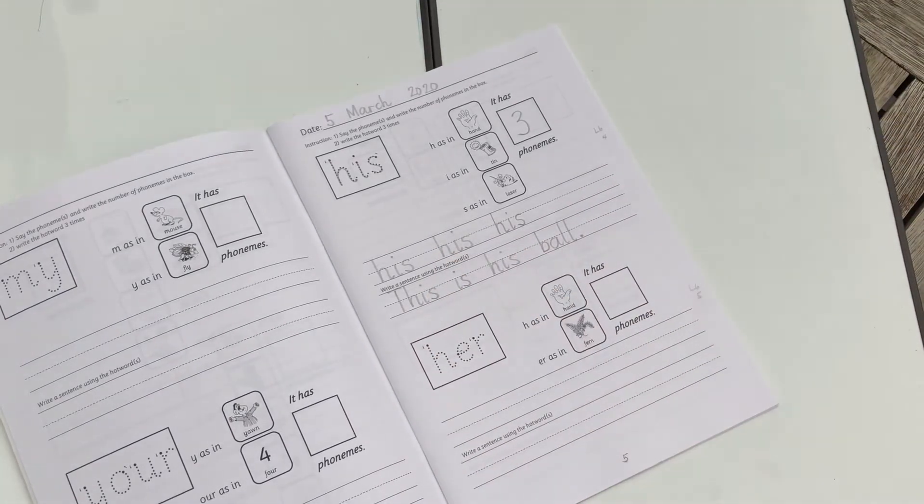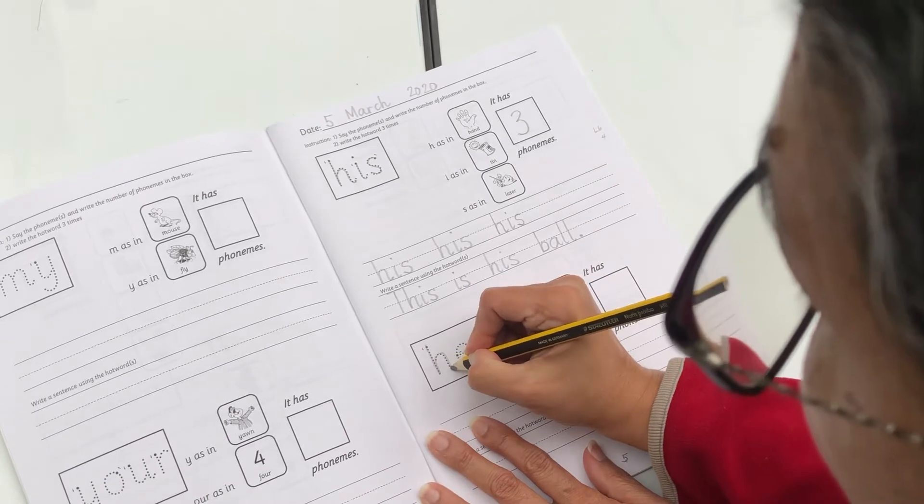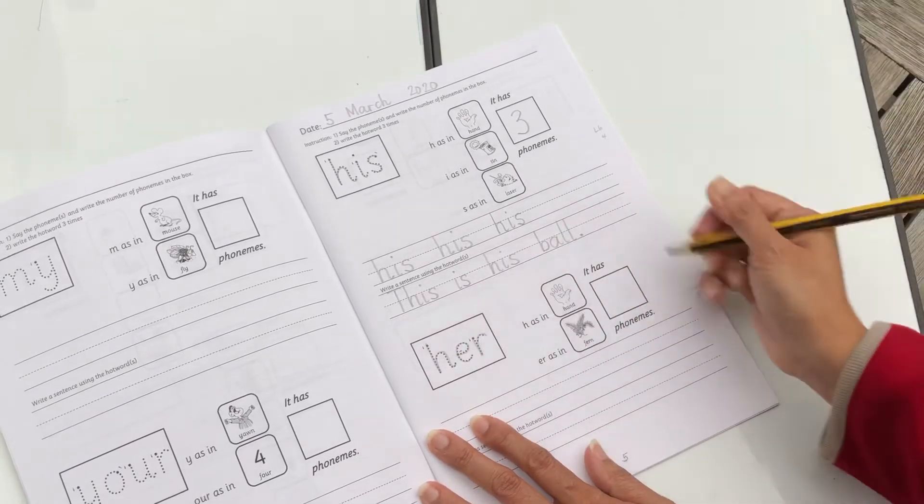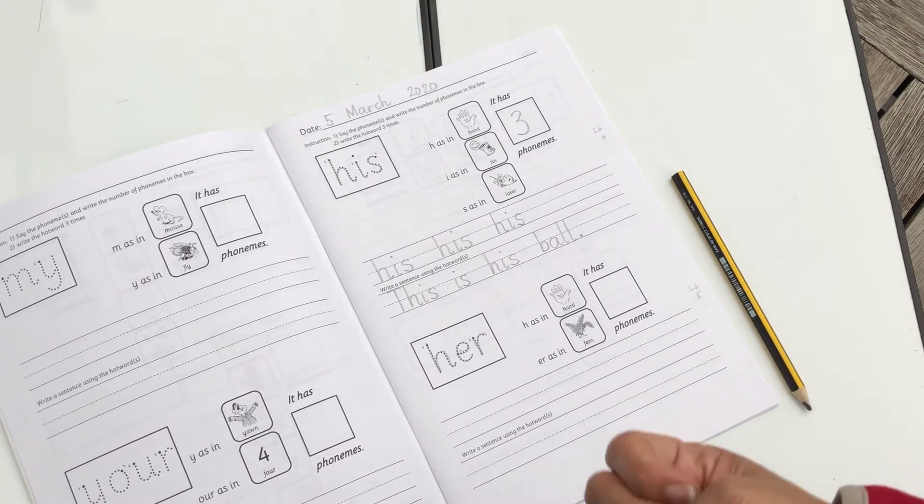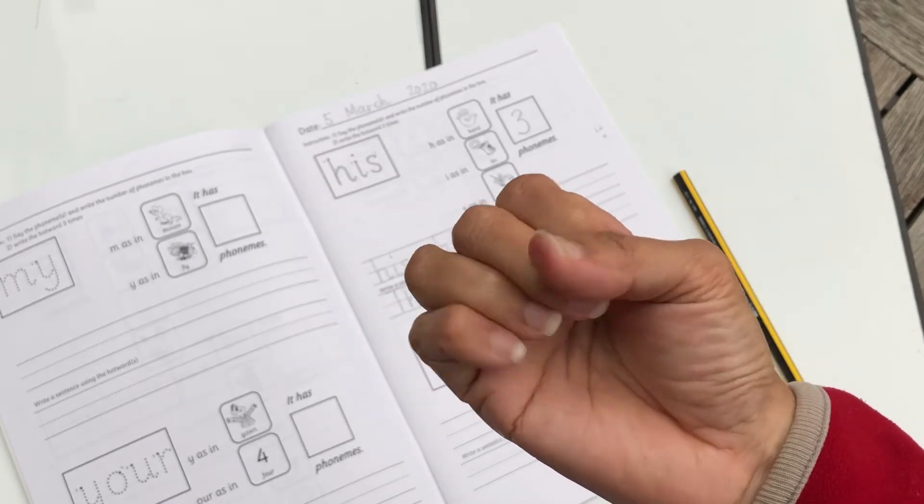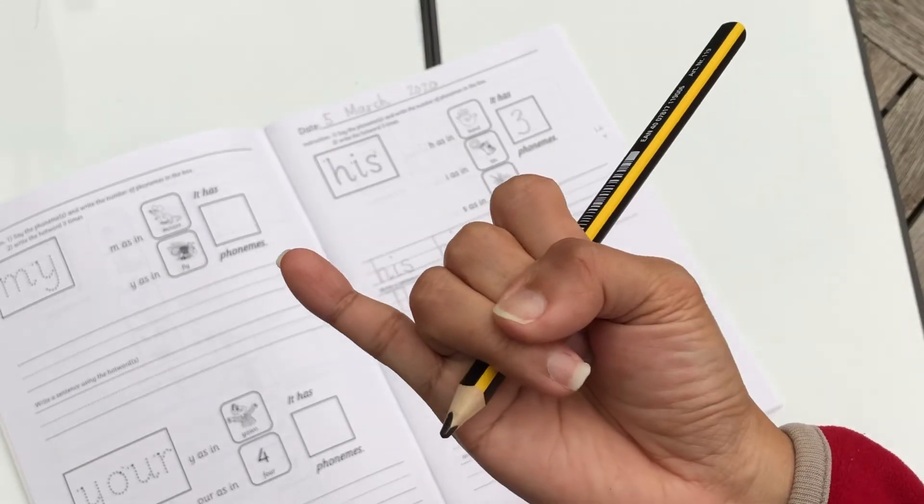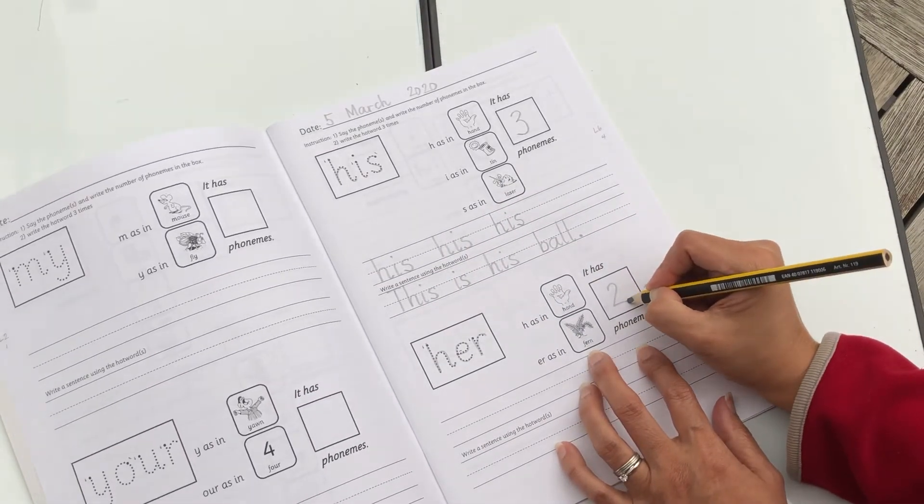Now, let's go to her. Trace it. Her. How many phonemes do you hear? Her. H like in the h in hand, and er as in the er in fur. So it has two phonemes.